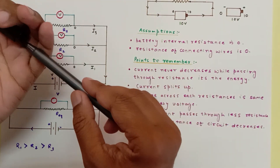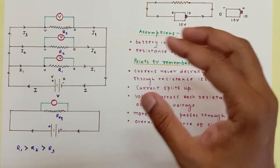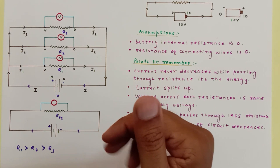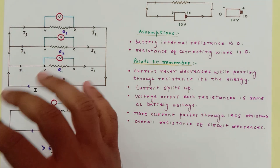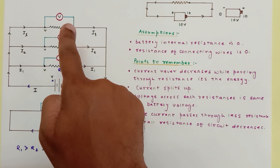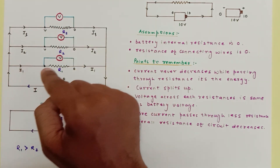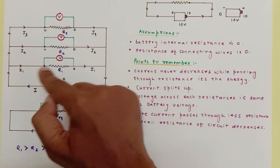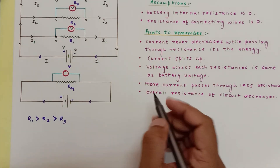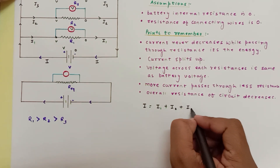Just like a person taking the shortest path with the least obstacles to reach a destination, current also passes through the path with the least resistance. So the majority of current will pass through R3 since it has the lowest resistance, and the least current will pass through R1. However, it's not possible for zero current to pass through R1 — some small current will always pass through it. The total current I equals the sum of I1, I2, and I3.